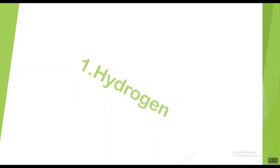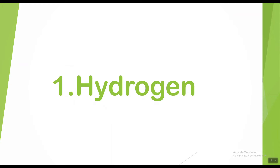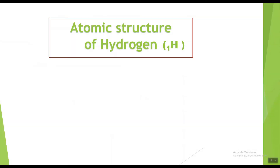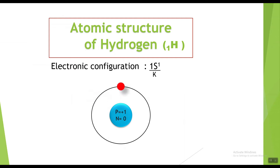Let's start with hydrogen. The symbol for hydrogen is H with atomic number 1, which shows it has one electron. The electronic configuration of hydrogen is 1s1, showing it has one electron in the K shell. This is the atomic structure of hydrogen: it has one proton in the nucleus, no neutron, and one electron around the nucleus.